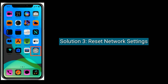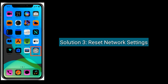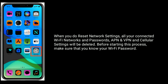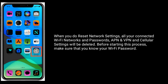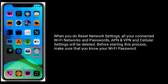Solution 3 is: Reset network settings. When you do reset network settings, all your connected Wi-Fi networks and passwords, APN and VPN settings, and cellular settings will be deleted. Before starting this process, make sure that you know your Wi-Fi password.